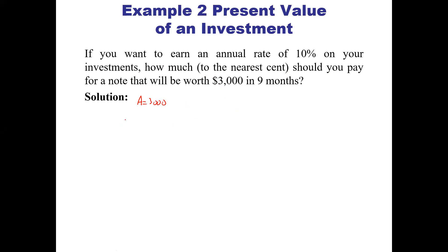Let's write what we know: the time is 9/12 or 3/4, the rate is 0.10, and we're looking for P. We have 3,000 equals P times (1 + 0.10 times 3/4). To solve for P, we divide by (1 + 0.10 times 3/4).